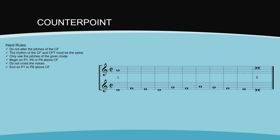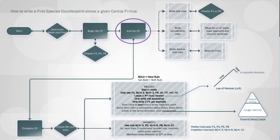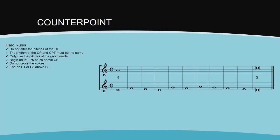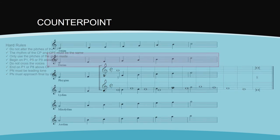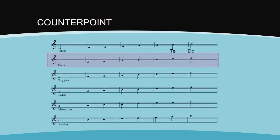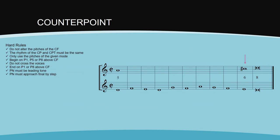The next rule concerns the penultimate note of the counterpoint. It must be the leading tone of the mode and must proceed to the final by semitone. This means that in modes that have a lowered seventh scale degree, such as this Dorian mode, the seventh should be raised in the counterpoint to create a leading tone that then progresses by semitone to the final.